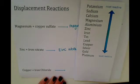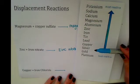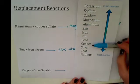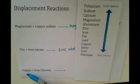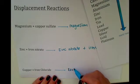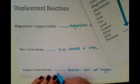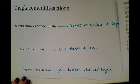In our final example, we have got copper plus iron chloride. We look at the reactivity series, but we see that in this case copper is below iron on the reactivity series. Copper is less reactive than iron. Therefore, this reaction won't work. The iron is more reactive, so it's going to stay with its chloride, and the copper is not reactive enough to come in and kick that out. So the reaction will not happen. If you'd put copper and iron chloride in a beaker, you would be left with copper and iron chloride because it wouldn't have reacted, and a displacement reaction would not have happened.